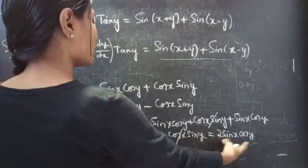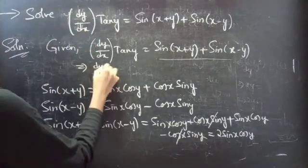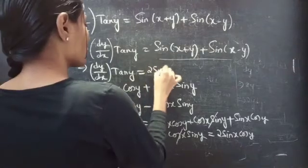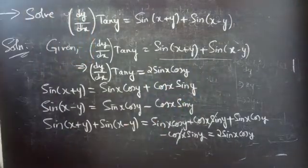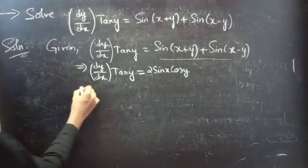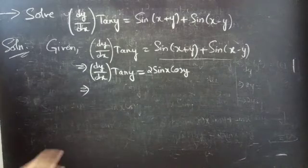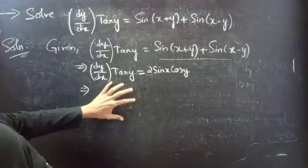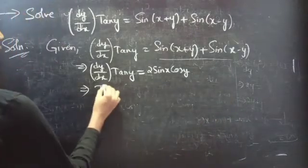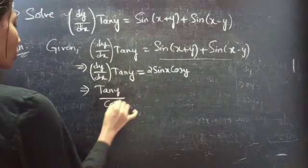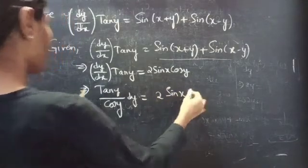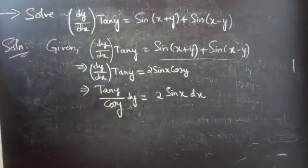We can replace the right-hand side by 2·sin(x)cos(y). Then the given equation becomes dy/dx · tan(y) = 2·sin(x)cos(y). Writing functions of y and dy on the LHS and functions of x and dx on the RHS, we get tan(y)/cos(y) · dy = 2·sin(x)·dx. Here the variables are separable.